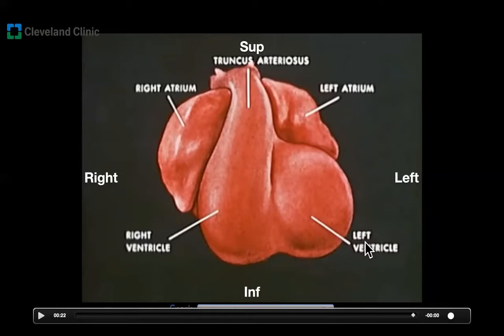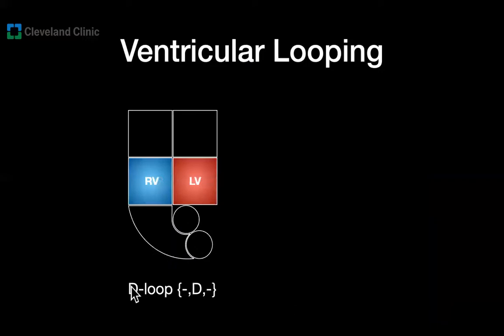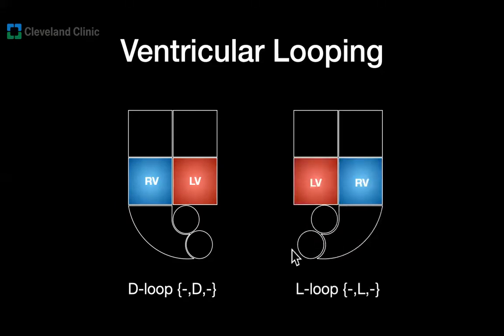When the cardiac tube loops in the opposite direction — towards the left — the opposite happens: the right ventricle will be located on the left side of the patient. For ventricular looping we have two options. When it loops to the right, we use the letter D to represent D-looping — right ventricle on the right side of the patient. When it loops to the left, we use the letter L for L-looping — the morphologic right ventricle is now located on the left side of the patient. The two ventricles are switched.